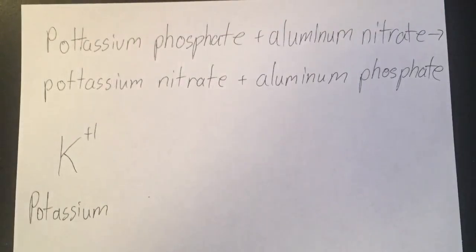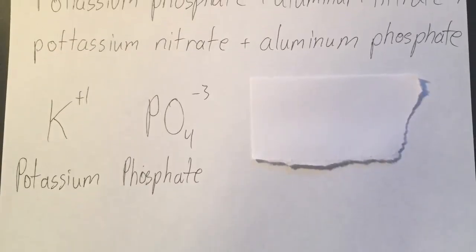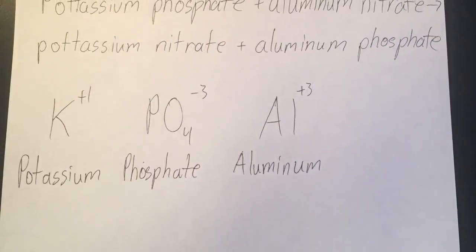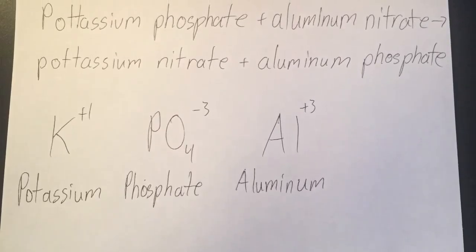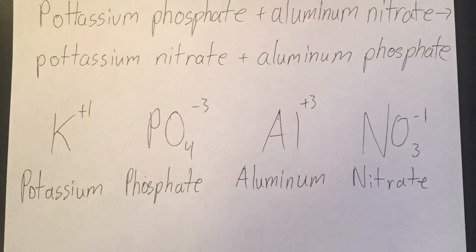Potassium has a charge of plus one. Phosphate has a charge of negative three. Aluminum has a charge of plus three. And nitrate has a charge of minus one.